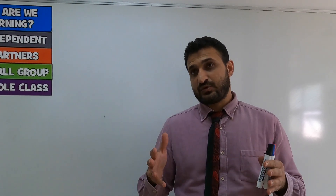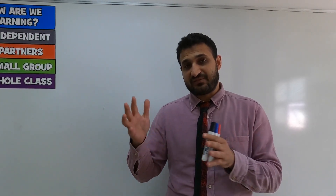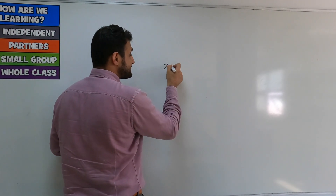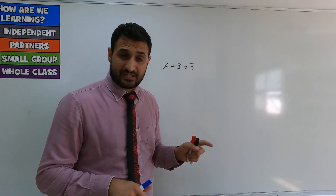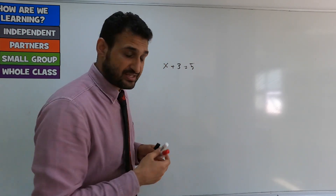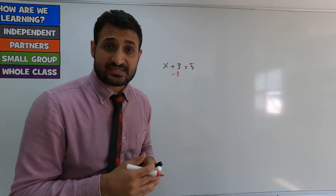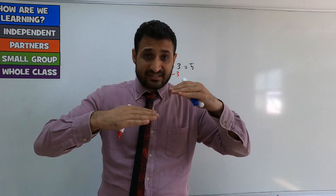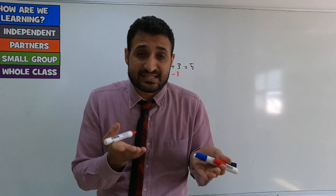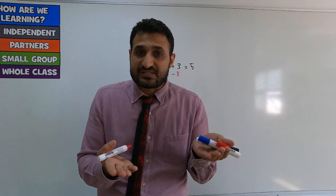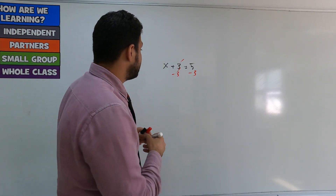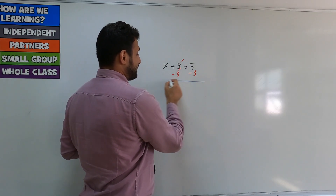The second way of solving one-step equations is doing the opposite. For example, if I have x plus 3 equals 5, you ask yourself: I added 3 to x to make it 5, so you just subtract 3 from both sides. In equations, if you subtract a number from one side you need to do the same thing on the other side, because it's about equality — both sides must be equal. So minus 3 from both sides gives you x equals 2.